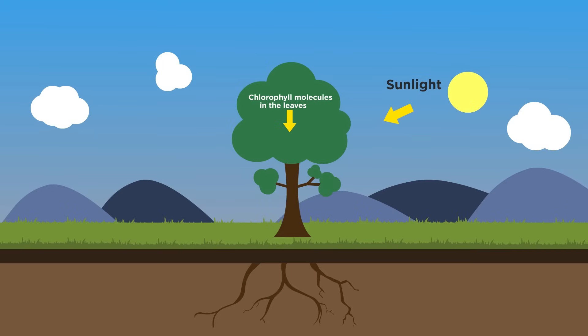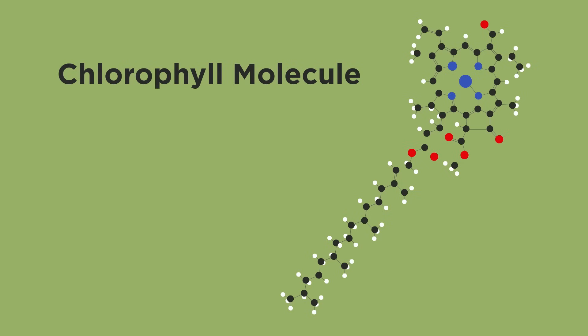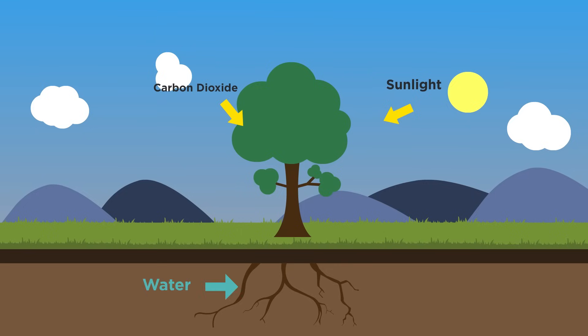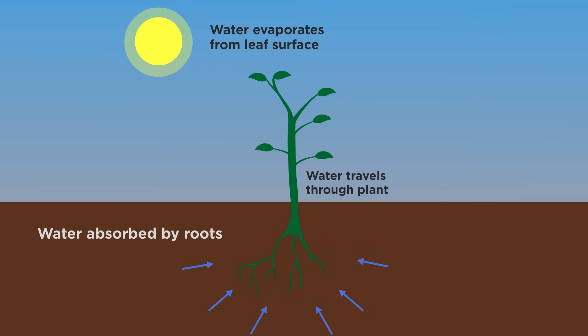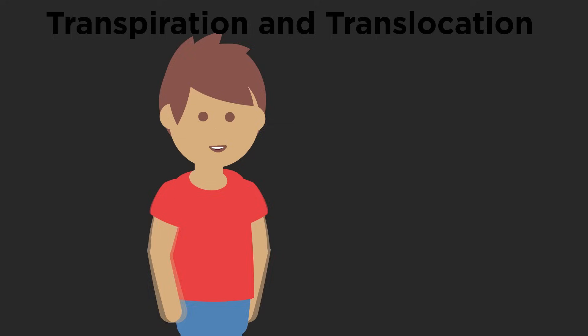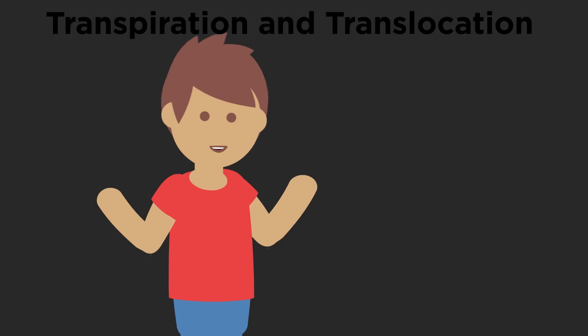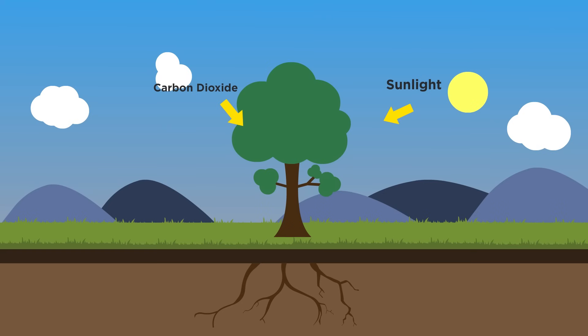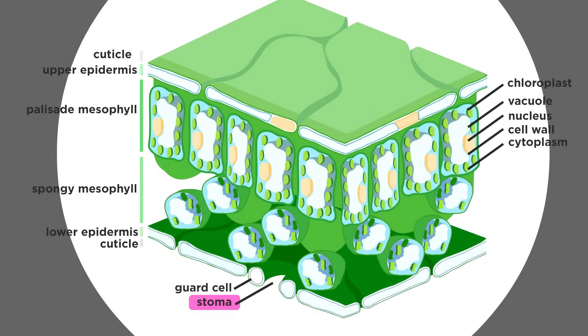We know the light energy comes from the sun and is absorbed by chlorophyll. But where do the carbon dioxide and water come from? Plants absorb water through their roots and it moves through the plant into the leaves by transpiration. Watch our video on xylem and transpiration to learn more about this process. Carbon dioxide enters the leaves from the air through the stomata on the underside of the leaf.